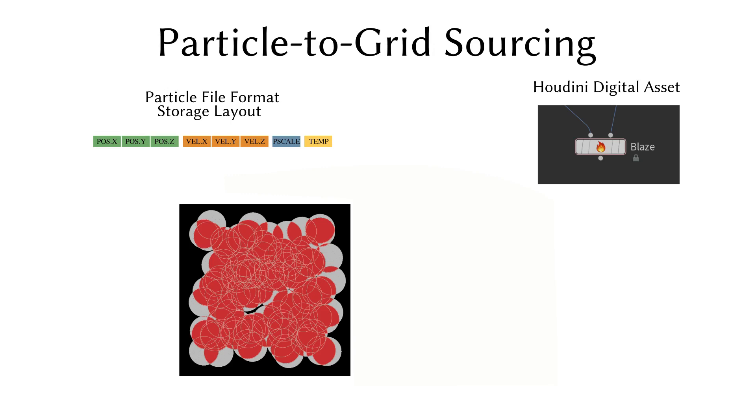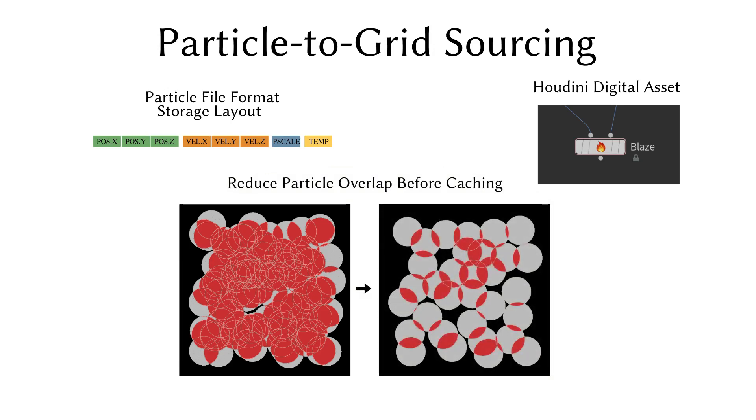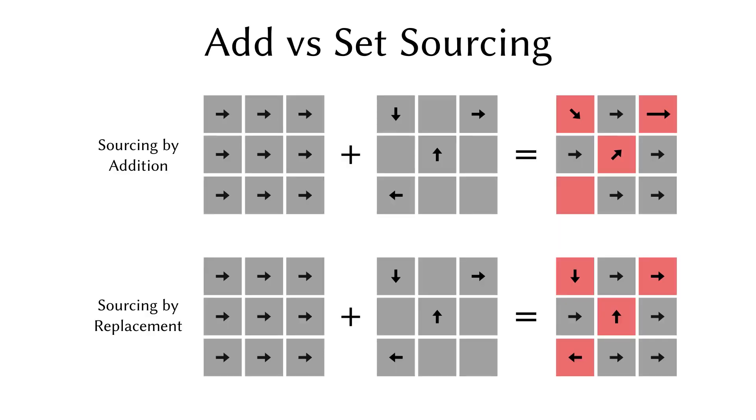The use of those operations is known to lead to severe performance degradation, but it is possible to reduce the impact of atomic functions by minimizing particle overlap before caching. As opposed to common implementation, our sourcing is done by replacement instead of by addition. This makes it easier to model abrupt changes in the grid and also keep the values bounded by the source to facilitate the adjustment of parameters depending on the range in the grids.